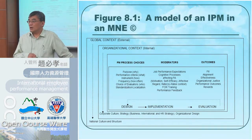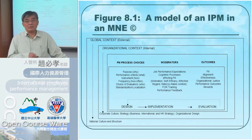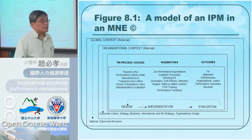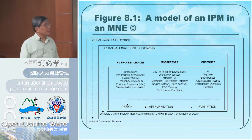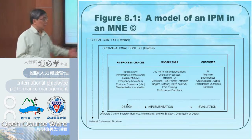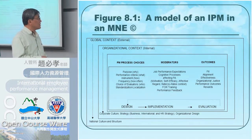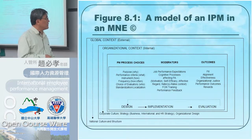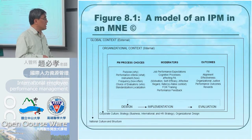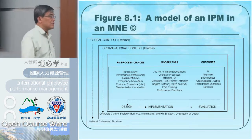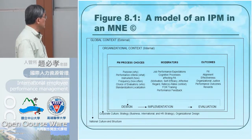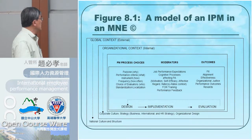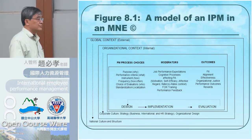The sixth question is standardization versus localization. This design phase — when you want to design your PN system — is related to the organizational context: corporate culture, strategy, and original design. You need to link these six questions to your organizational context. However, when you want to implement it, you need to consider the global context and cultural differences.